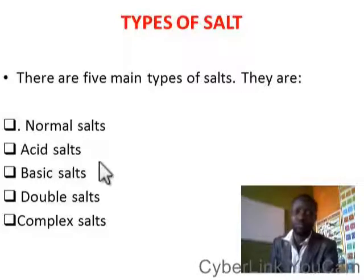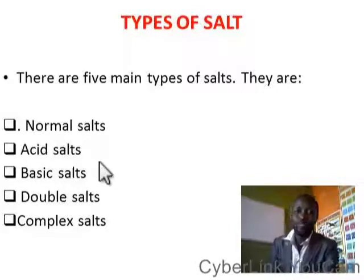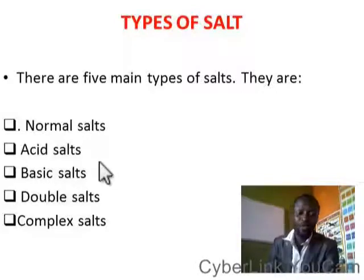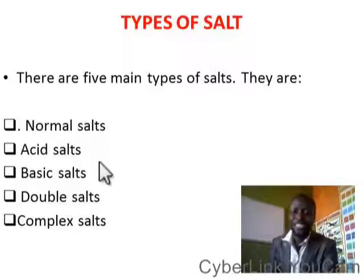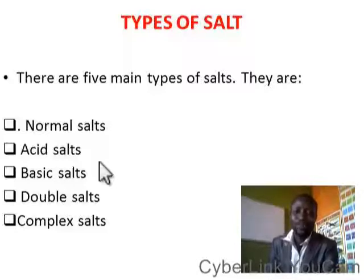If I may ask you this simple question: how many types of salt do we have? Your response will be five. Mention the five. Number one: normal salt. Number two: acid salt. Number three: basic salt. Number four: double salt. Number five: complex salt.